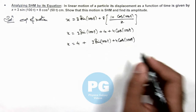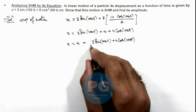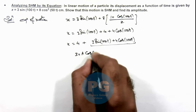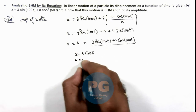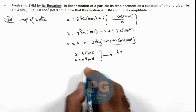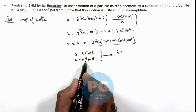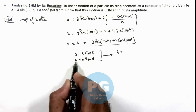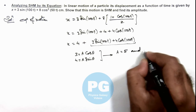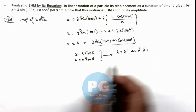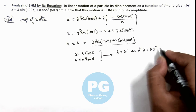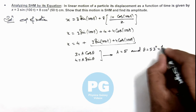This is a similar SHM equation we already studied in concept videos. Here we resubstitute the terms as 3 equals A cos theta, and 4 equals A sine theta. Squaring and adding both terms, the right-hand side gives A squared and the left-hand side gives 3 squared plus 4 squared, so A equals 5. Dividing the two, tan theta equals 4 by 3, so theta is 53 degrees, or tan inverse of 4 by 3.